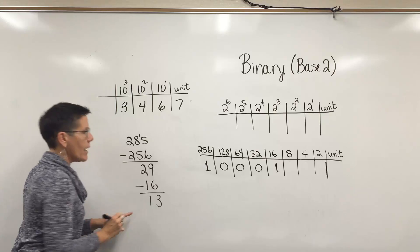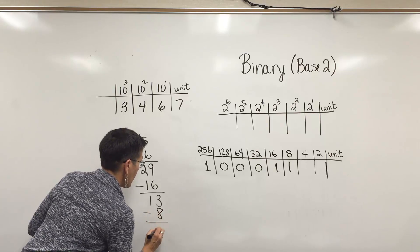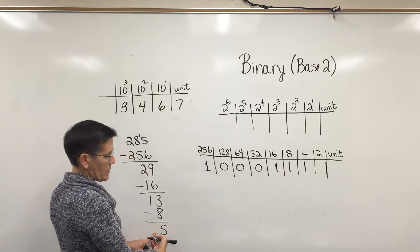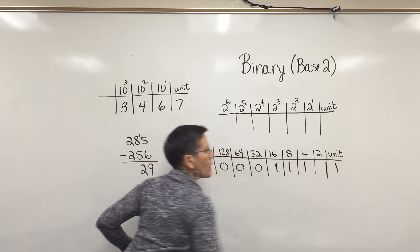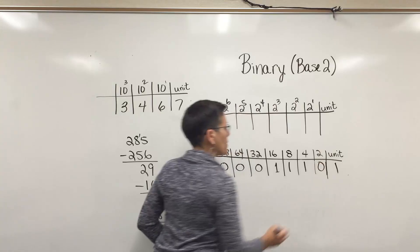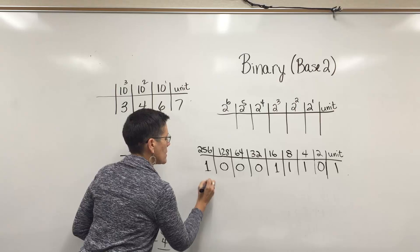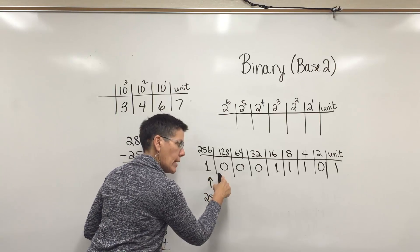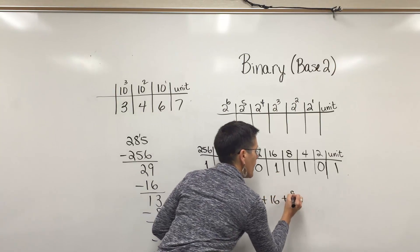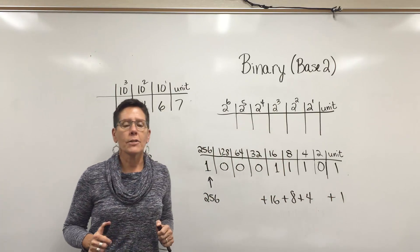But I can get a 16 out of the number 29. I can get an 8 out of 13 and I'm left with 5. I can get a 4, and I even can look at this 5 and say that I'm going to need a 4 and a 1 for the number 5. Again, I could check this value. What I have is a 256, I don't have any of these, but I have a 16 and 8, a 4 and a 1. Those numbers should add up to be 285.